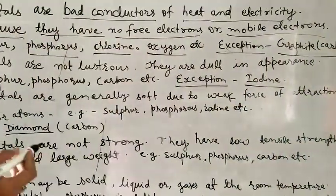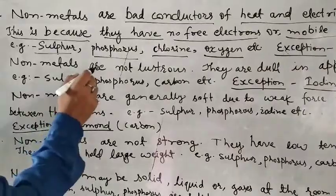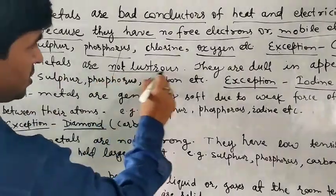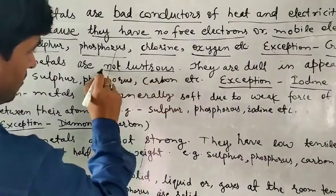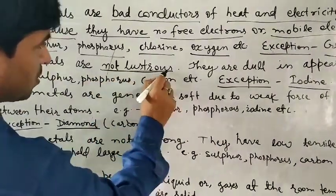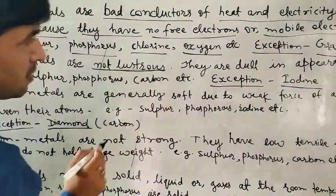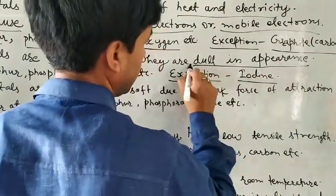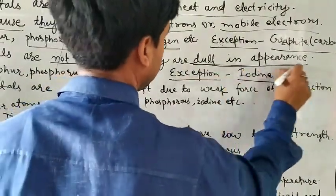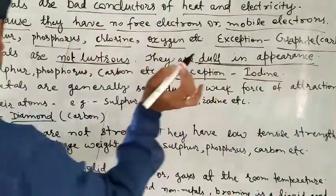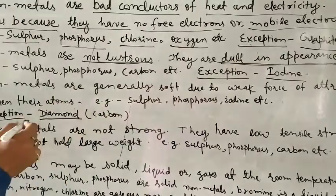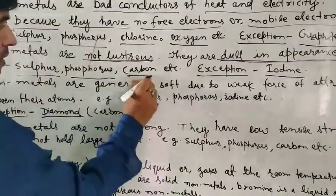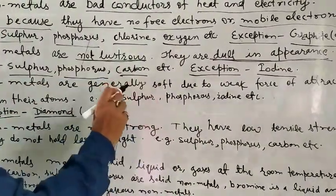The fourth property is that non-metals are not lustrous — they are dull in appearance. For example, sulfur, phosphorus, carbon etc. are dull.